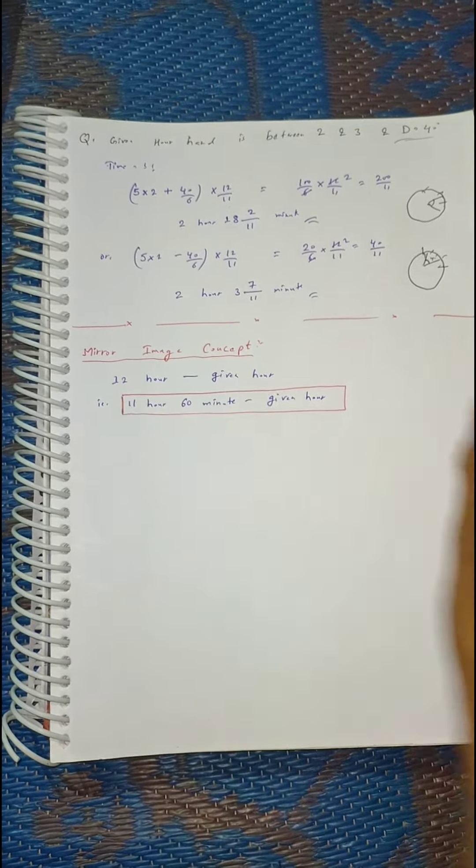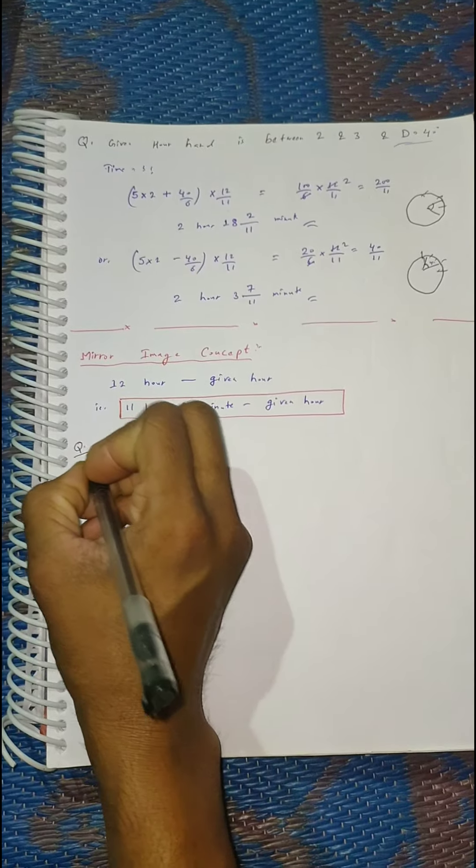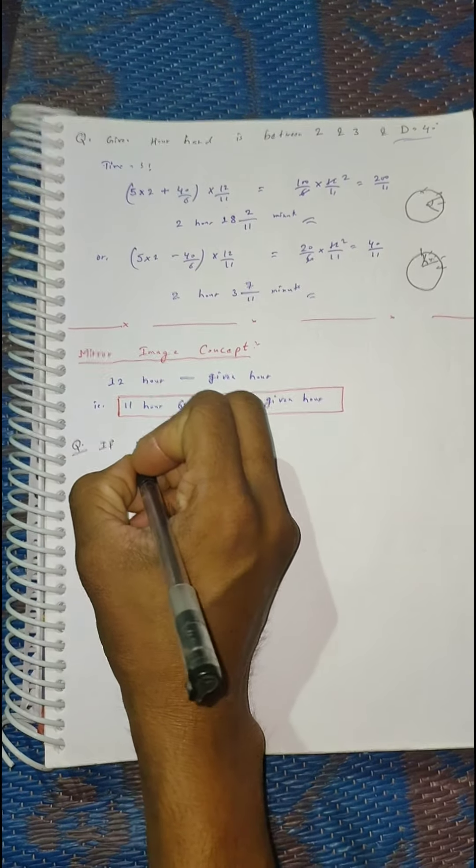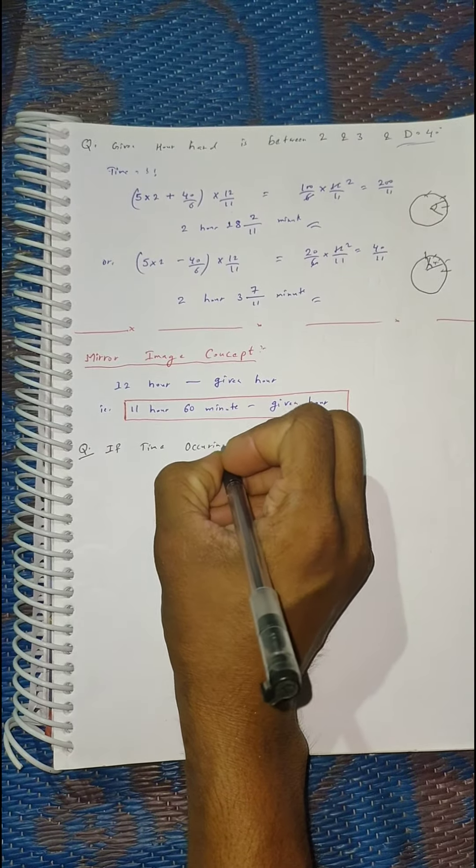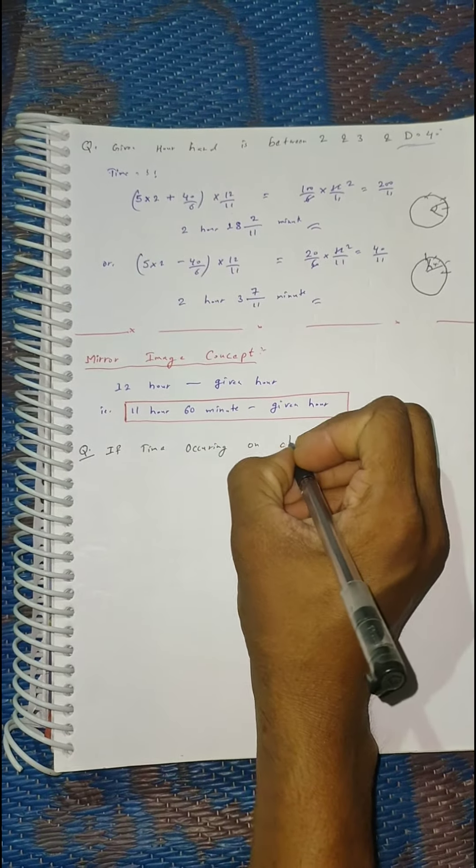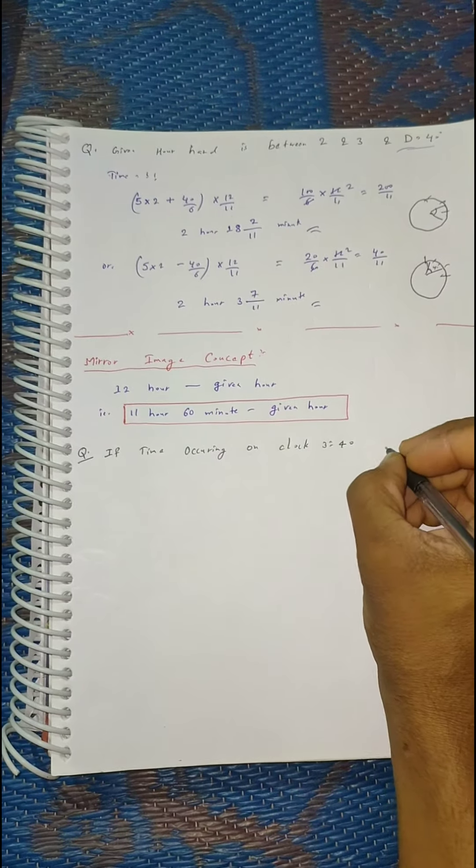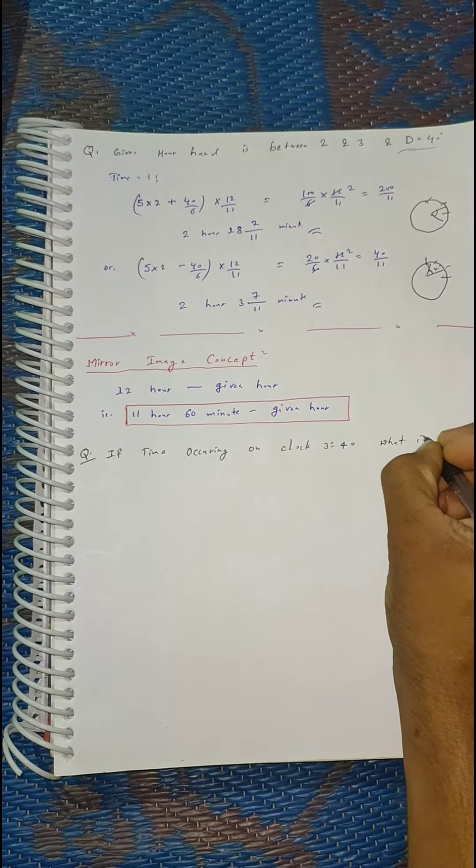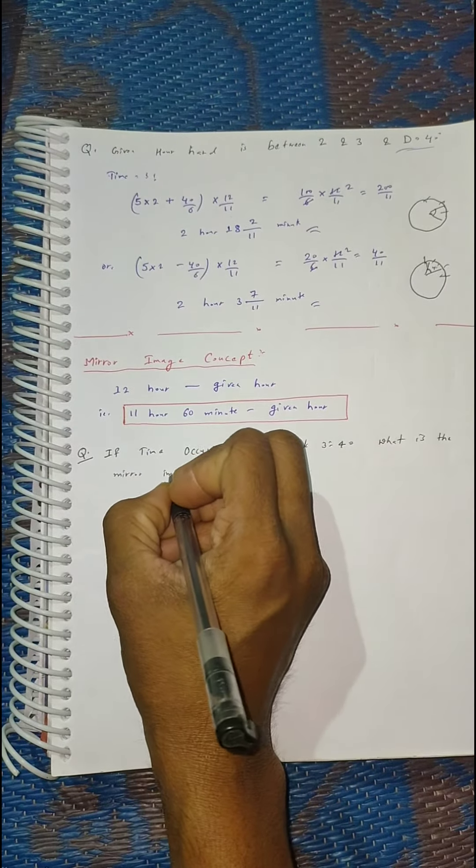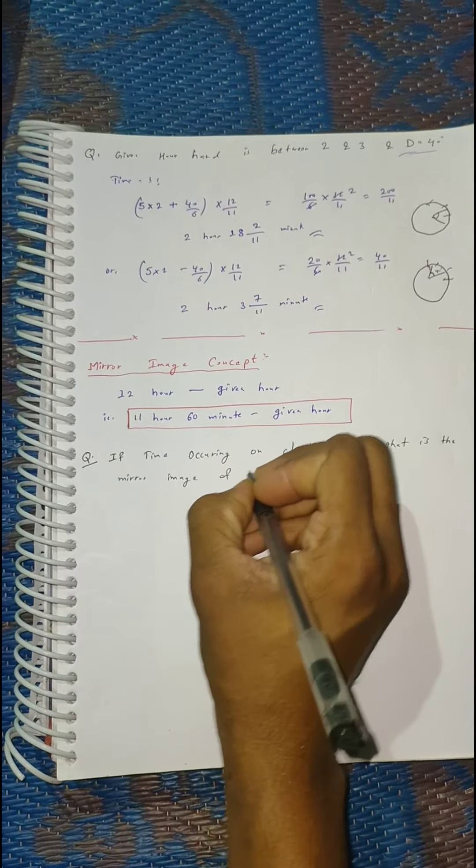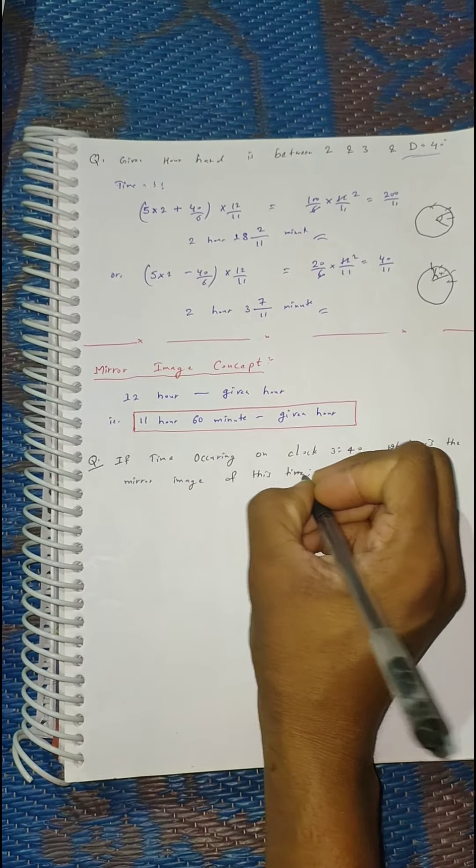Let us take an example of how an examiner asks you this question and how you solve it. If the time occurring or happening on the clock is 3:40, then what is the mirror image of this time?